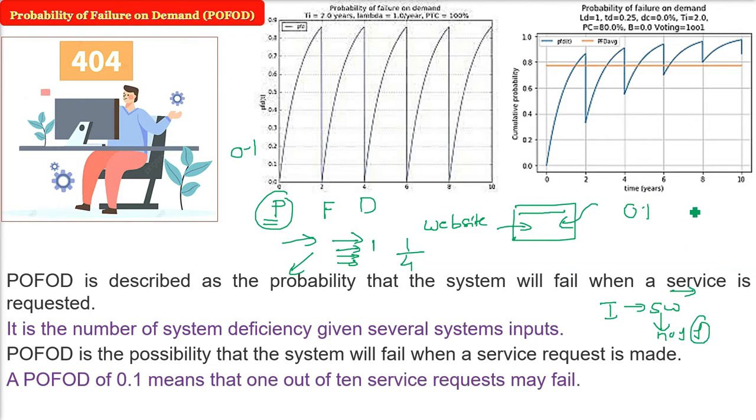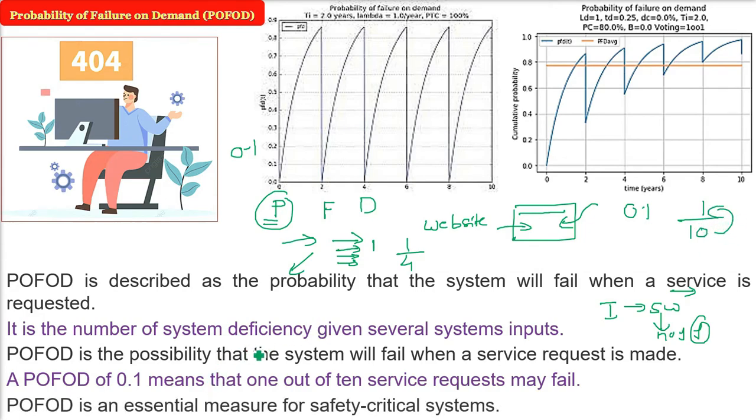0.1 as a probability means it is 1 by 10. For 10 events, 1 will be failing.